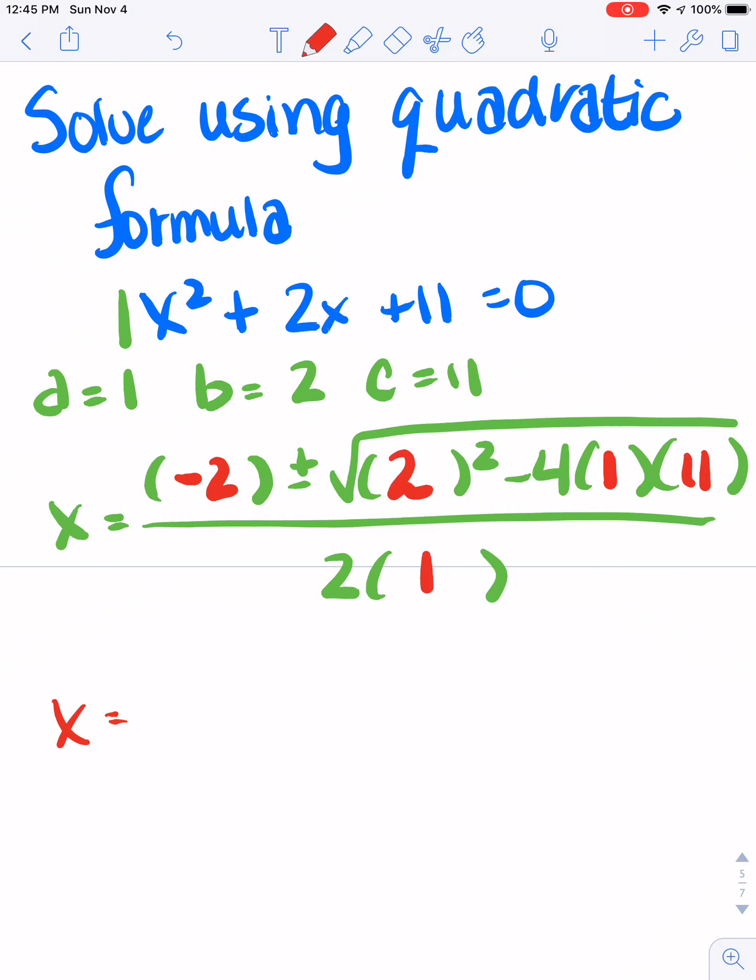So if I go to simplify, it's going to be -2, plus minus the square root. On the bottom, if I do 2 times 1, that's going to give me 2. And now I'm going to put this part into my calculator. Not the square root, just the part that's underneath it. So if I have 2² - 4(1)(11), I get -40.